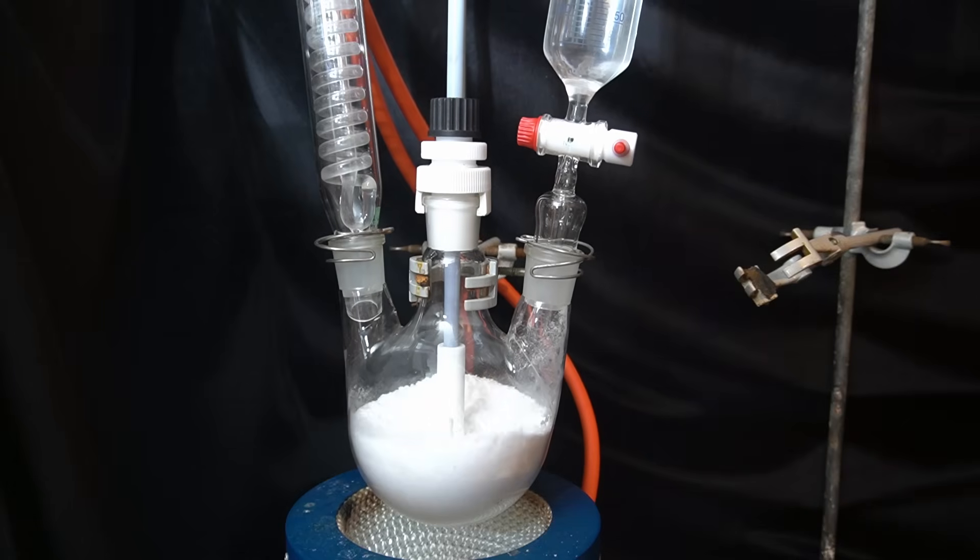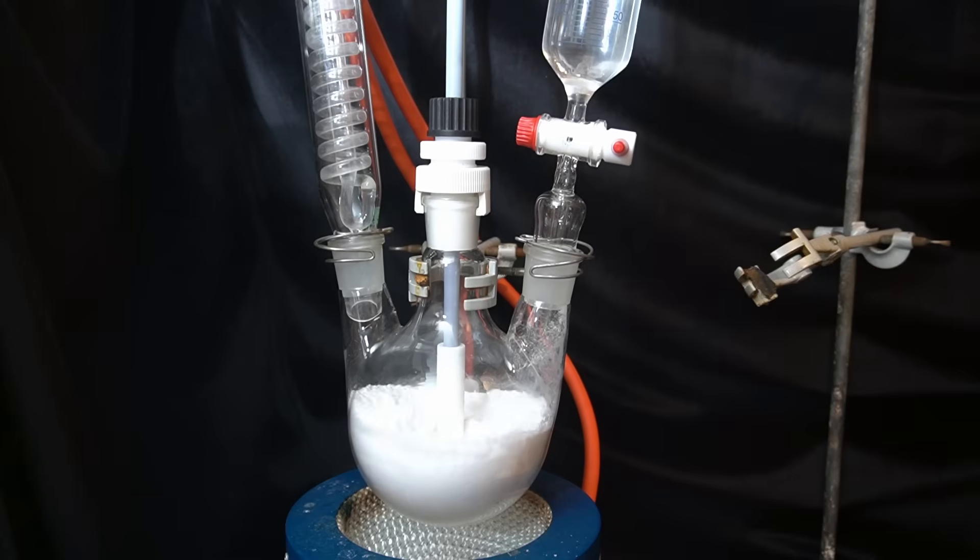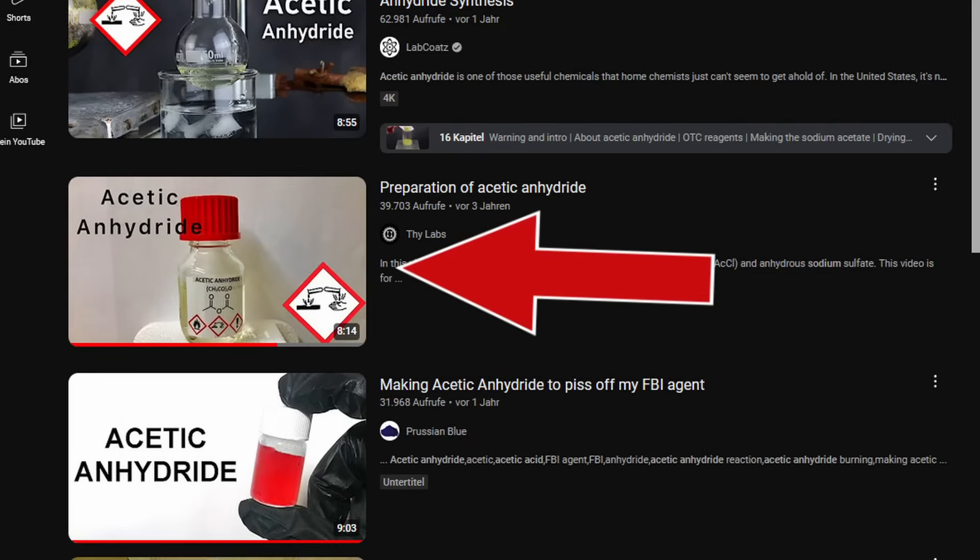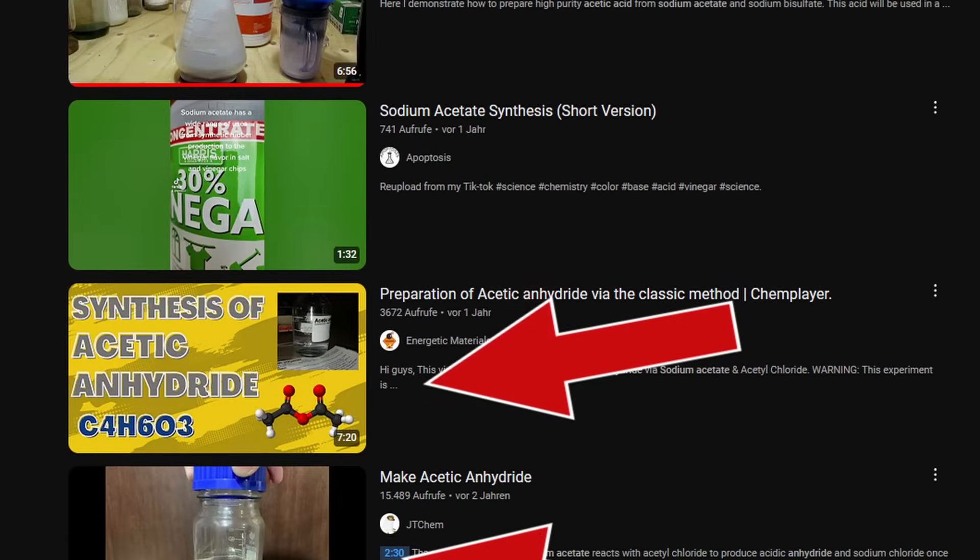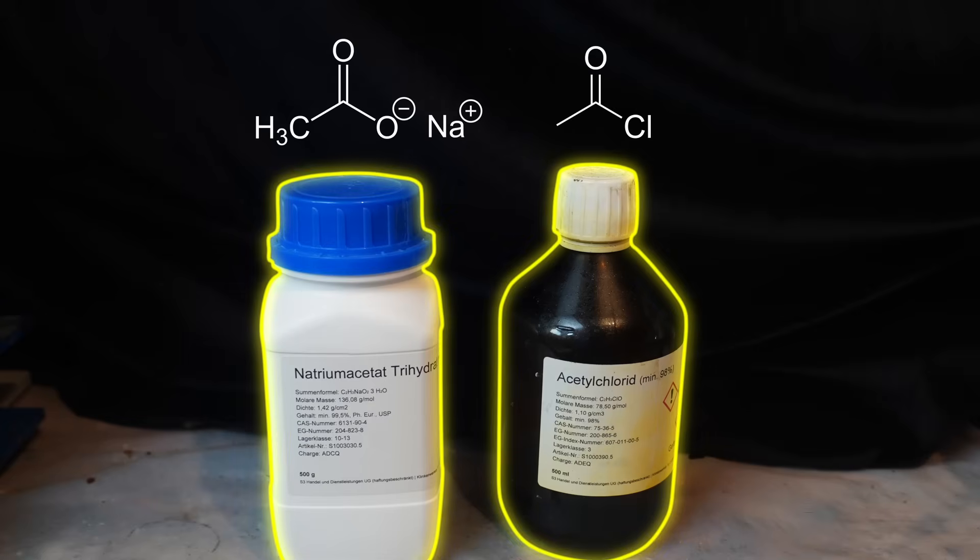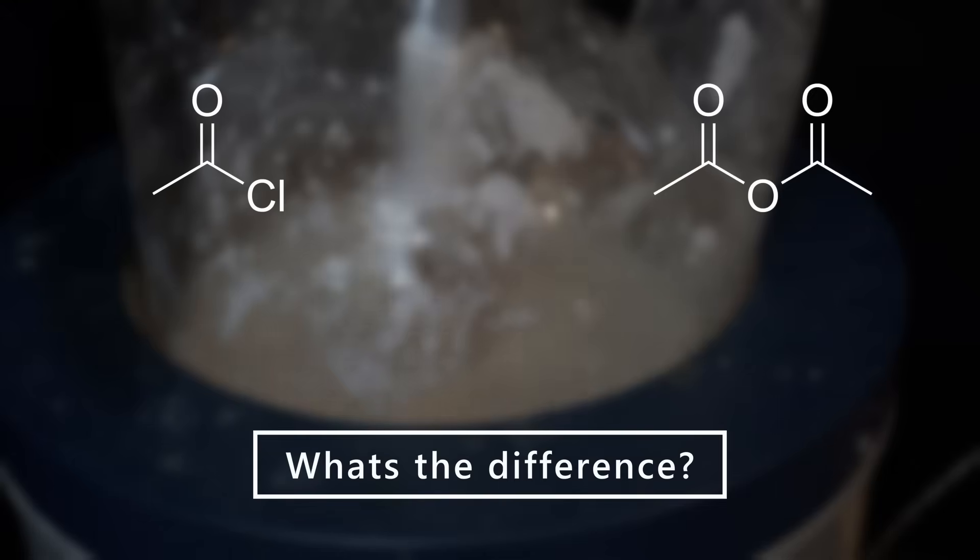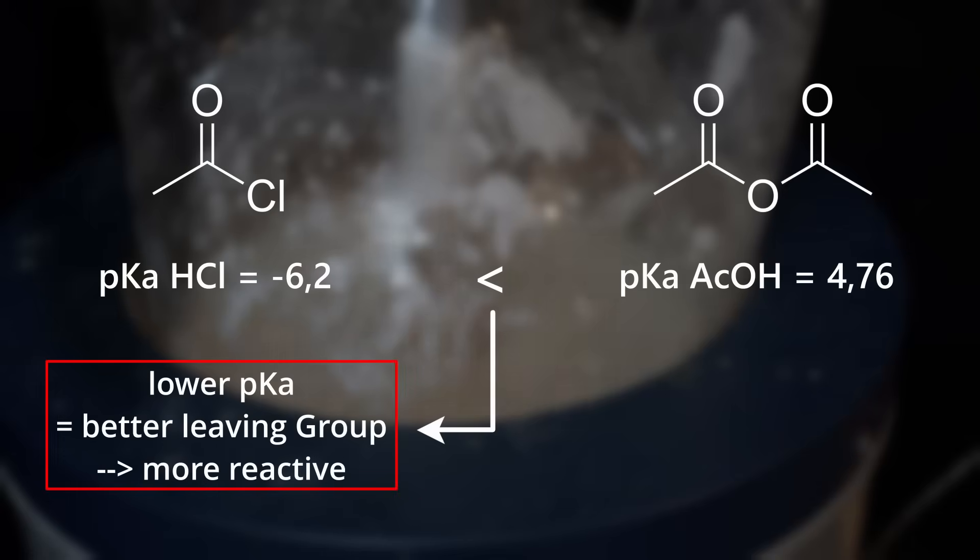Thankfully, it can be easily made from precursors which, at least for me, are very easily purchasable. This synthesis is quite well known on YouTube and only uses acetyl chloride and sodium acetate. And while acetyl chloride can do mostly the same things as acetic anhydride, there are a few major differences. Chloride is a much better leaving group than acetate, which makes acetyl chloride a lot more reactive than acetic anhydride.